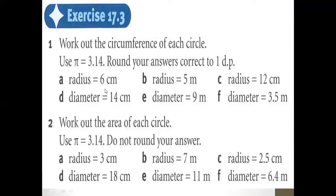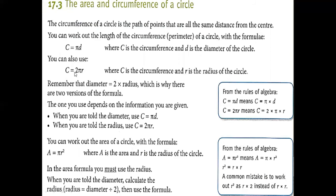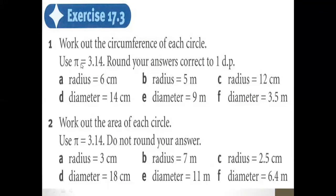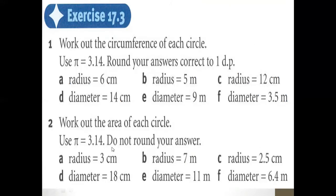So as we've seen: if we have a radius, we use the formula C equals 2 pi R. If we have a diameter, we use C equals pi D. Now for area: if R equals 3, we substitute into A equals pi R squared — 3 squared is 9, and 9 multiplied by 3.14 gives 28.26. You do the same thing with all parts of the question.